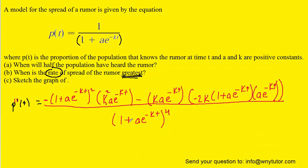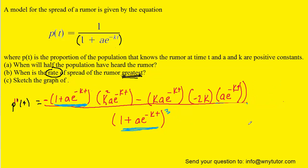This can be cleaned up a bit. There's a common factor of (1 + ae^(−kt)) in both clusters of terms in the numerator and also in the denominator, so we can cancel out one factor. This squared becomes raised to the first power, and the denominator becomes raised to the third power. In order to find the maximum value, we set the derivative equal to zero and solve. Putting zero over one and cross-multiplying, zero times the denominator is still zero, so we can rewrite the equation without the denominator.